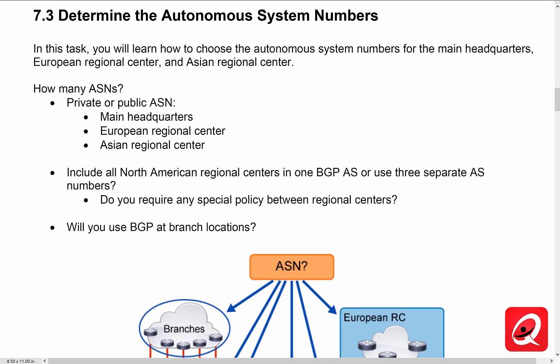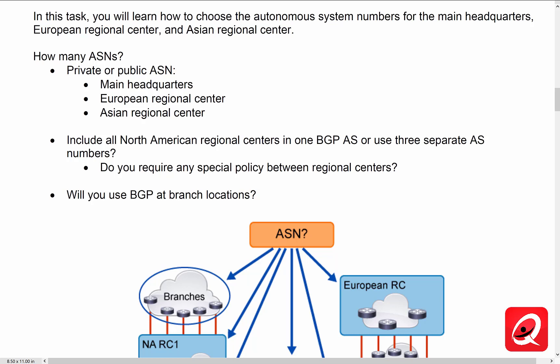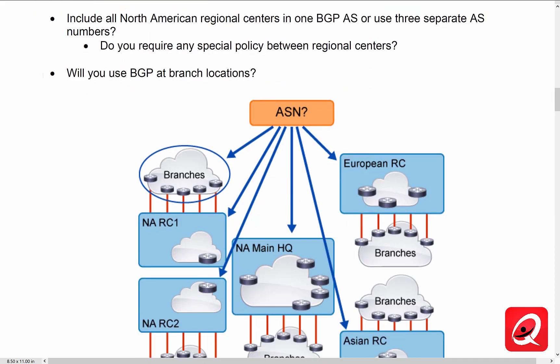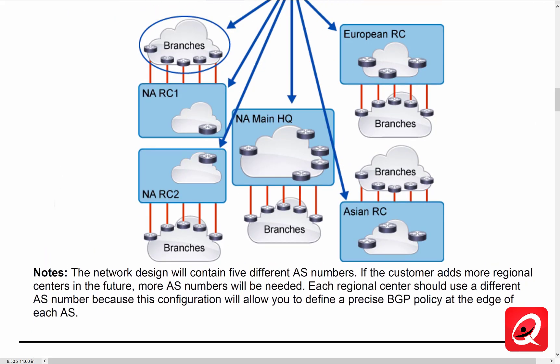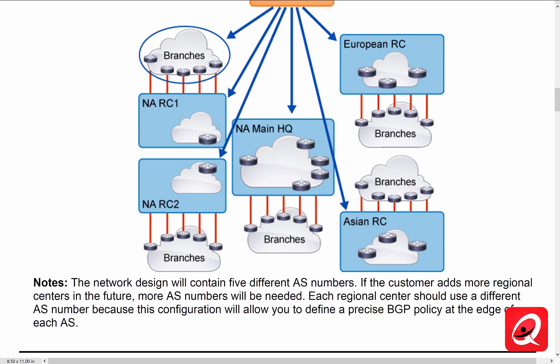The next step is to determine the autonomous system numbers. We need to choose the autonomous system numbers for the headquarters, the European regional center, and the Asian regional center. How many autonomous system numbers do we need? I'm guessing three — we have the headquarters, which includes a couple of regional centers and the main headquarters location. We'll put all of those in one autonomous system, but certainly we'll have a separate autonomous system for Europe and Asia. Do we include the North American regional centers as one BGP AS or as three separate ASs? The design will consist of five different AS numbers. If the customer adds more regional centers in the future, more AS numbers may be needed.